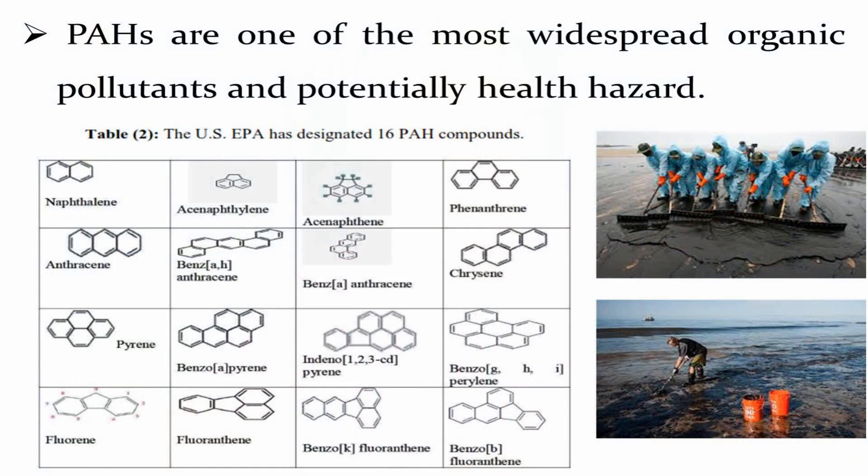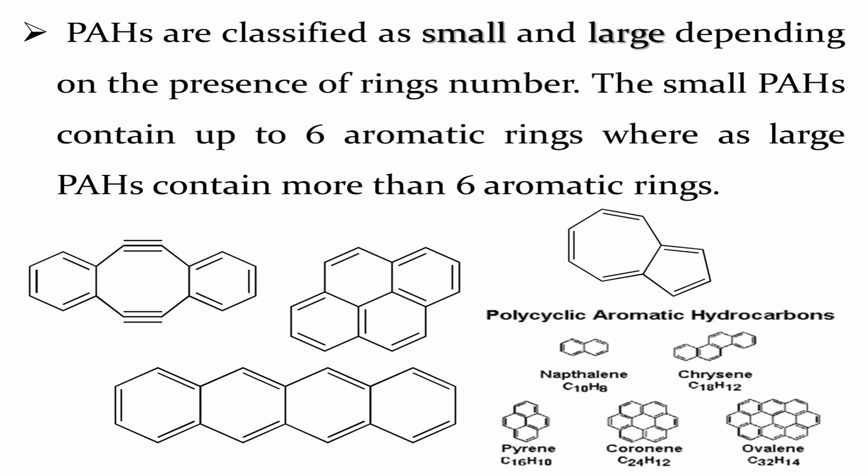The figures provided show some polyaromatic hydrocarbon-polluted sites — dark and sticky. The table provided shows the structures of some hydrocarbon compounds, classified as small or large molecules depending on the number of aromatic rings. Small compounds contain up to six aromatic rings; large compounds contain more than six. For example, pyrene has four rings and is a small compound, while ovalene contains more than six rings and is a large aromatic compound.